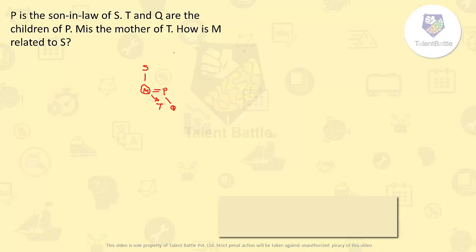So what have they asked? How is M related to S? The question is very easy — the answer is daughter. M is the daughter of S.